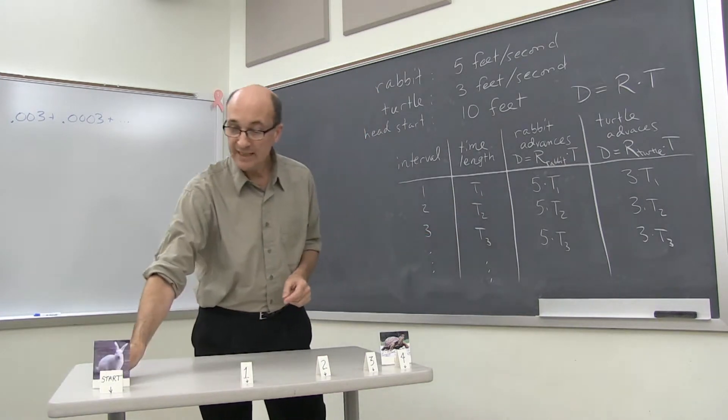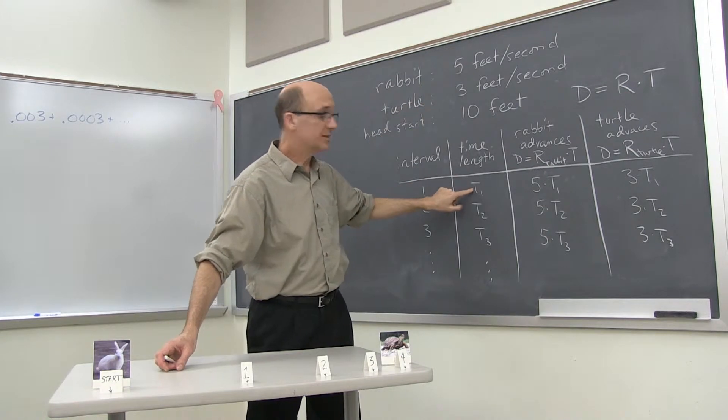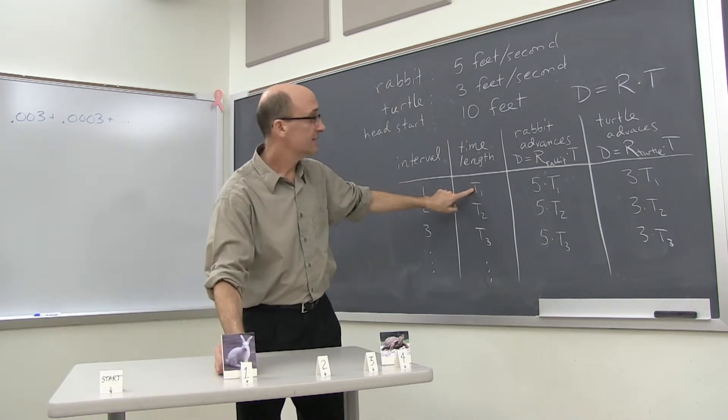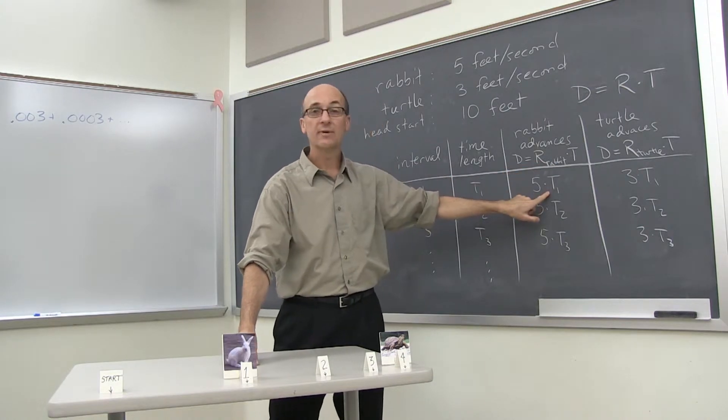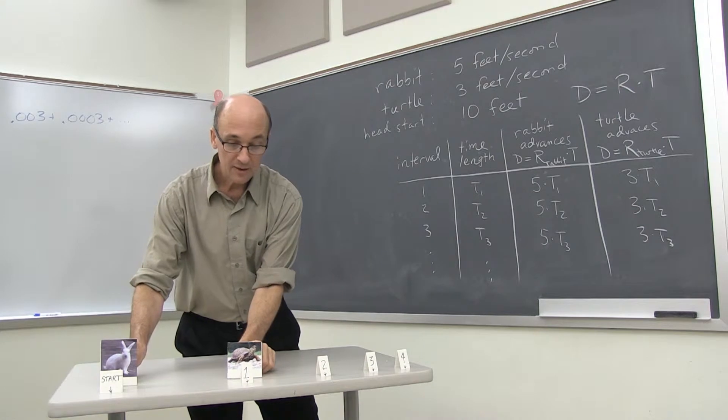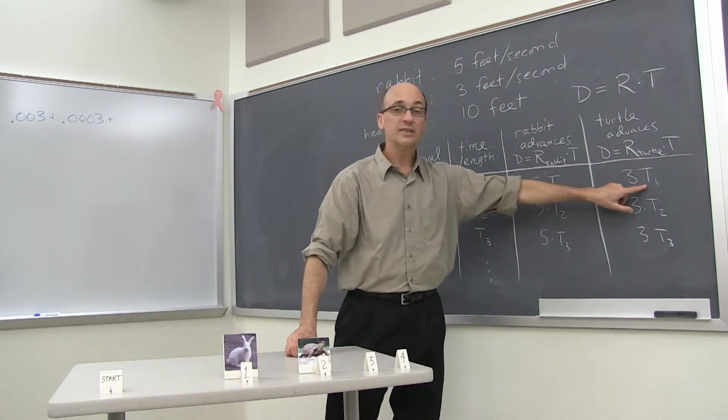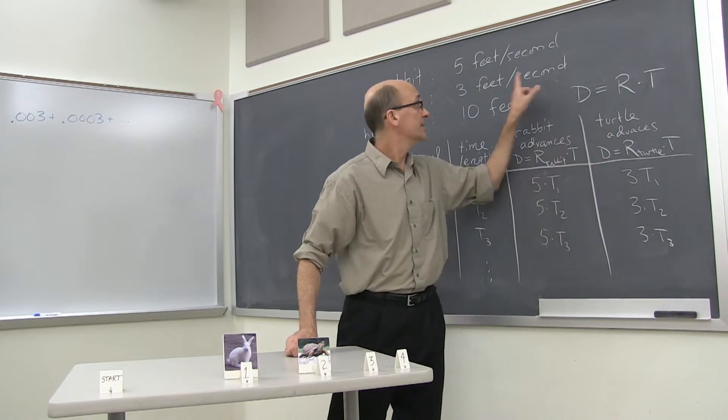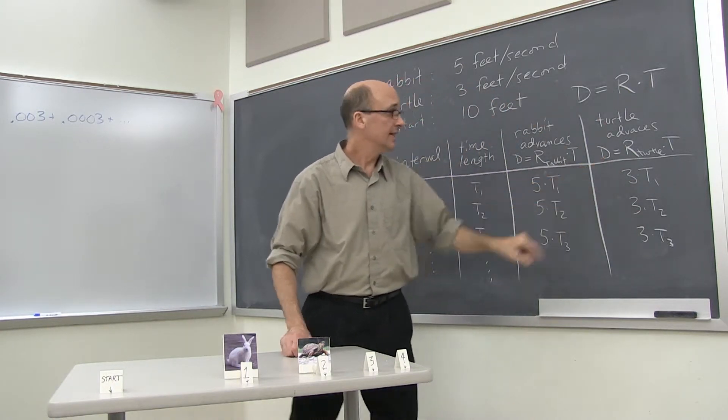So how far does the rabbit advance? The rabbit is running five feet per second. The rabbit is traveling T1 seconds. So five times T1, rate times time. That's the rabbit's distance traveled. And the turtle correspondingly moves during that same time interval three times T1. The turtle's rate is three. Three times T1 is the turtle's distance.